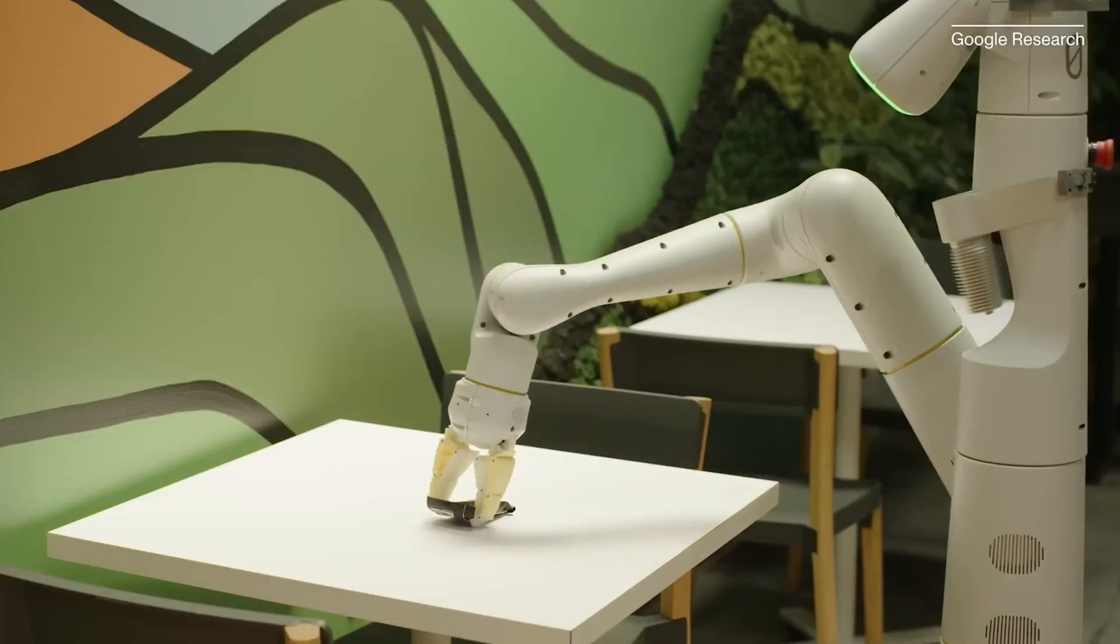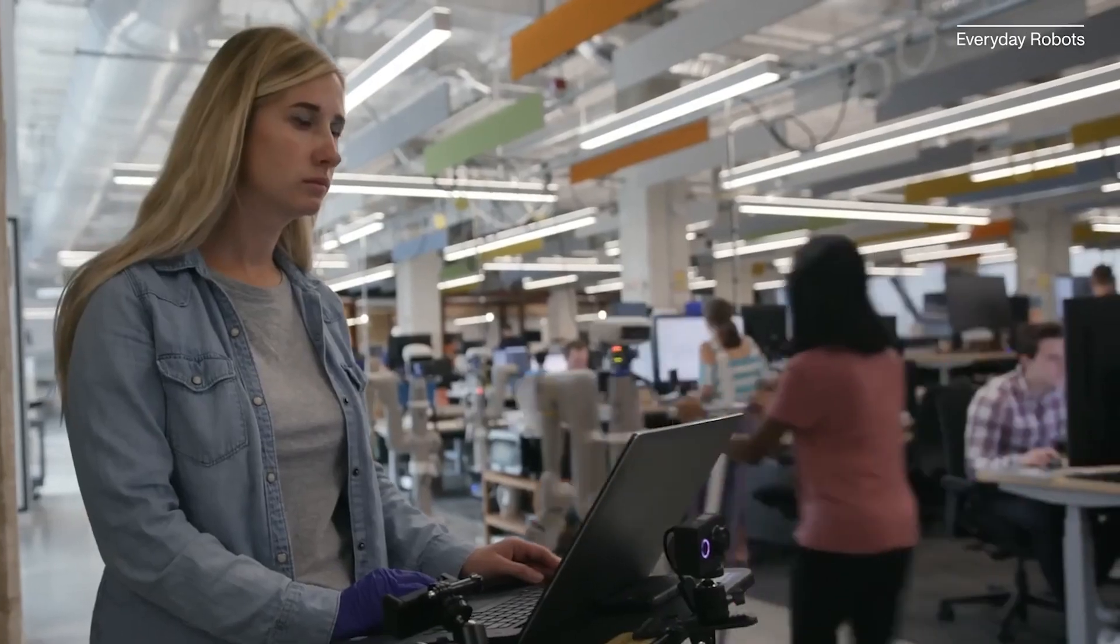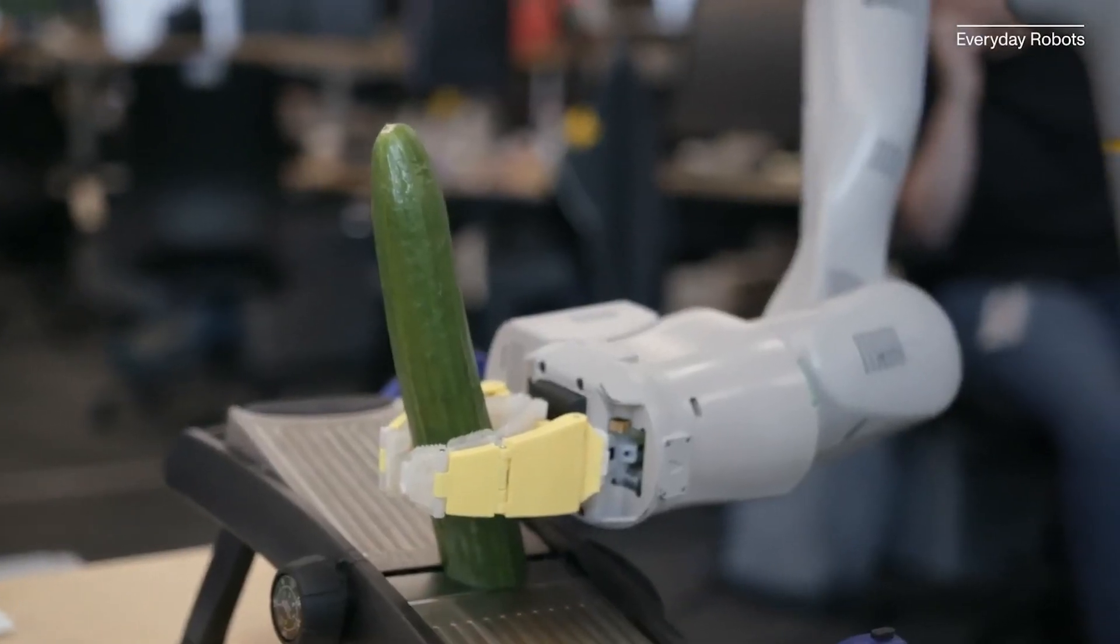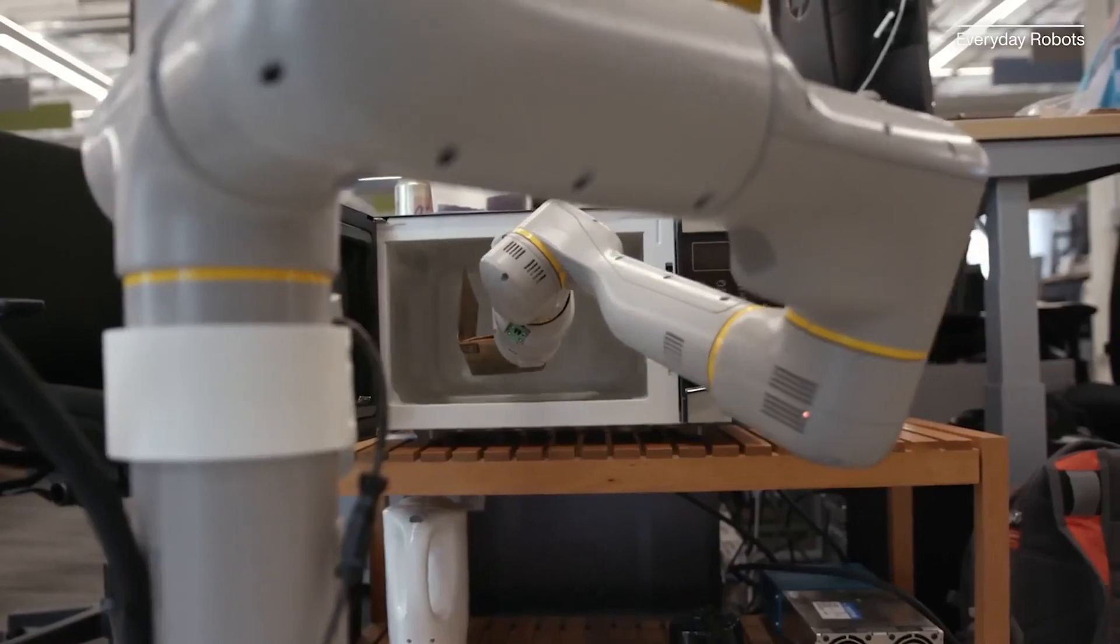The cool part is that RT2 performed really well in many experiments. It could do things like pick up a bag that was about to fall or move a banana to a specific spot, and it could do these things better than some of the other robots it was compared to.